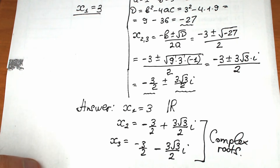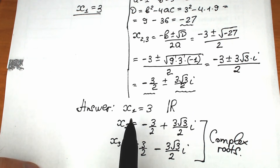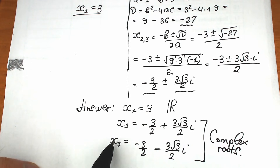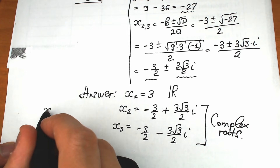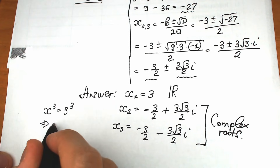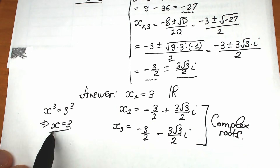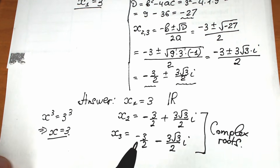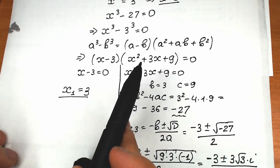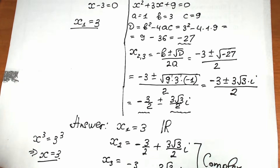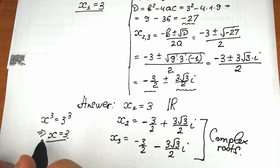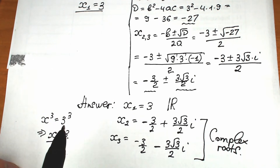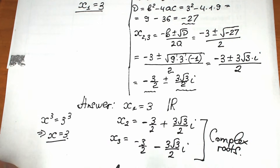As you can see, we completely solved this challenge — one real root and two complex roots. With the simple approach of x cubed equals 3 cubed giving x equals 3, you can't find these other roots. By factoring the challenge properly, we find the complex part, which is really important in mathematics. Simply writing x equals 3 in one line is a bad solution, especially on an exam. It is much better to solve completely using this approach.